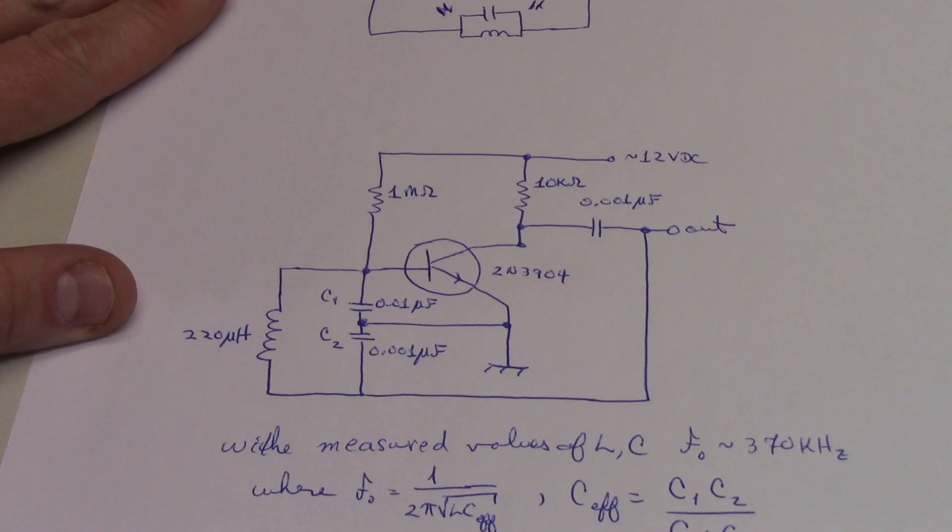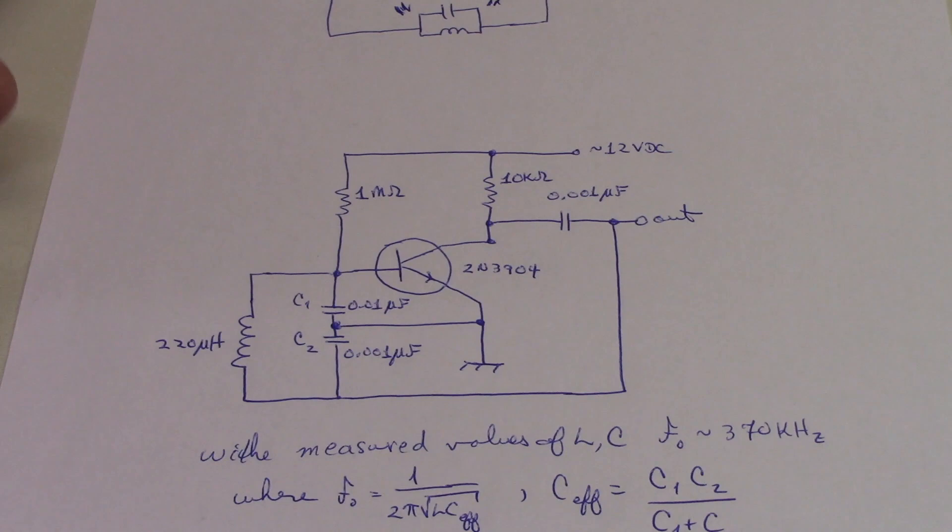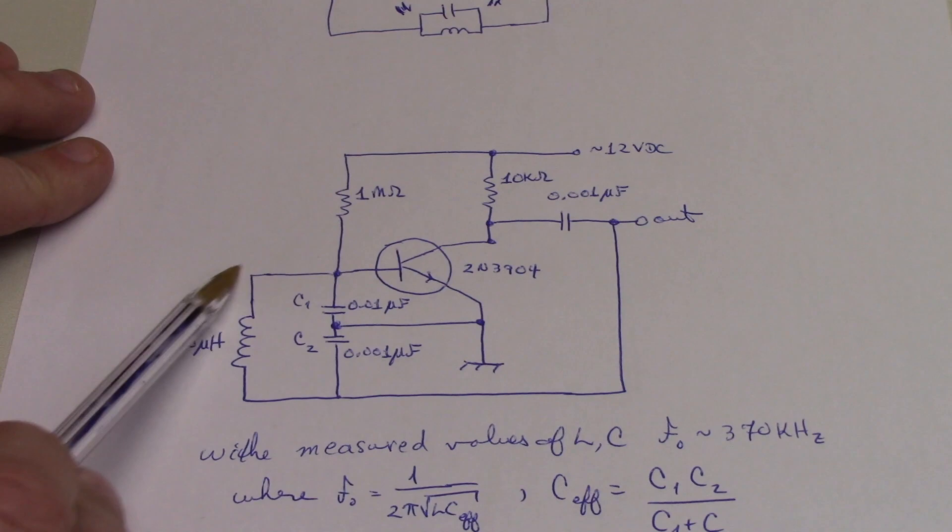So let's consider a very simple or simplistic common emitter amplifier, transistor amplifier. And we've shown that here. So this is the usual thing where if you did not have this part of the circuit and weren't picking off any of the output, this would just be a simple amplifier.